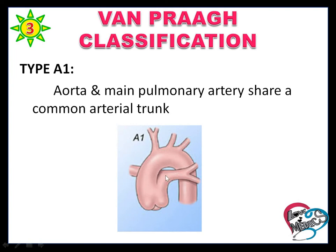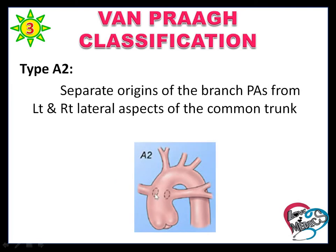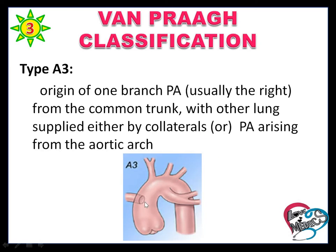Van Praagh Type 1: the aorta and pulmonary artery share a common trunk. Type 2: the right pulmonary artery arises from the right lateral aspect of the common trunk, and the left pulmonary artery arises from the left lateral aspect of the common trunk.